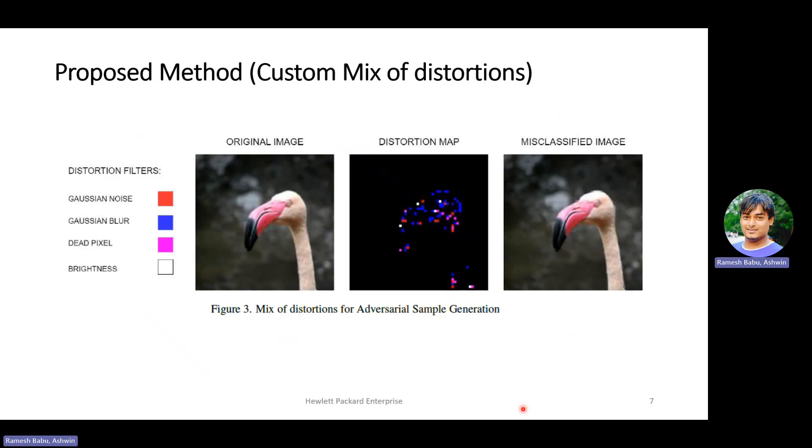Our approach is capable of adding multiple distortions as well. This means that our approach will choose the best set of patches to which distortions will be added along with the right set of distortions at a given step. In the figure, the different types of distortions are color coded. This means that the final misclassified image carries a mixture of distortions in them.